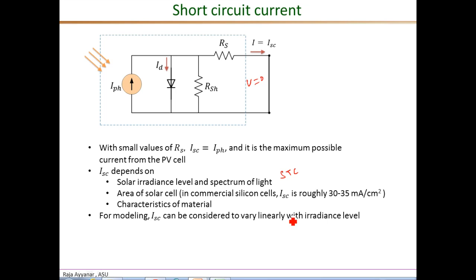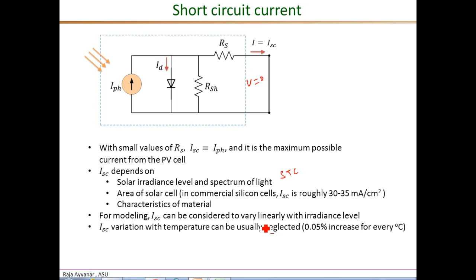For modeling purposes — which is what power systems and power electronics engineers are mostly interested in — the short circuit current can be considered linearly proportional to the irradiance level. The impact of temperature on I_SC is negligible; it has a positive temperature coefficient but a very small value, changing by only 0.05% per degree Celsius. Therefore, we take I_SC from the datasheet at STC, scale it by the known irradiance, and ignore the effect of temperature.